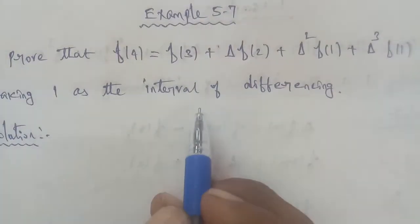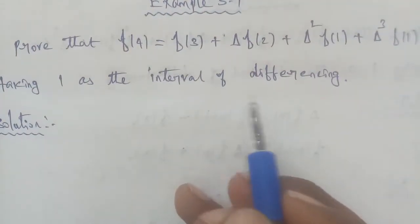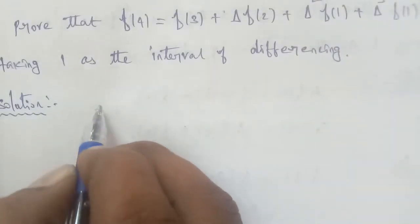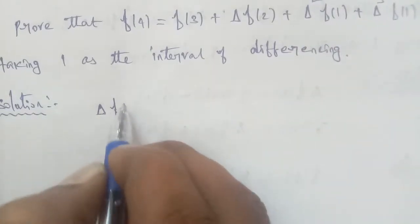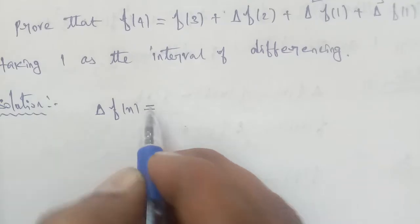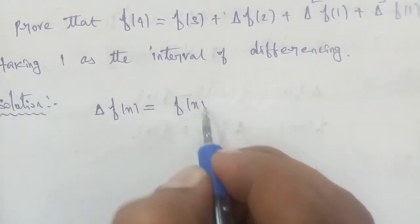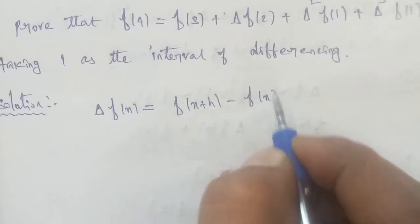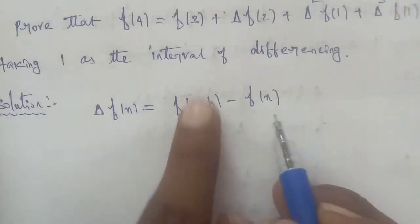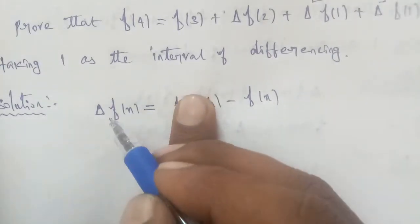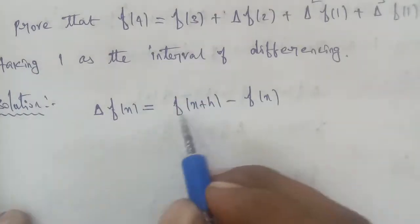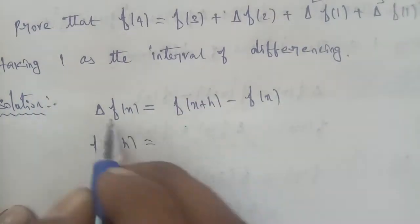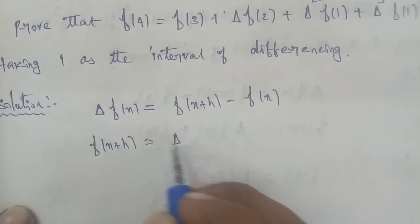In the proof, we use the forward difference operator formula. The formula is: Δf(x) is equal to f(x+h) minus f(x). So f(x+h) minus f(x) is equal to Δf(x).